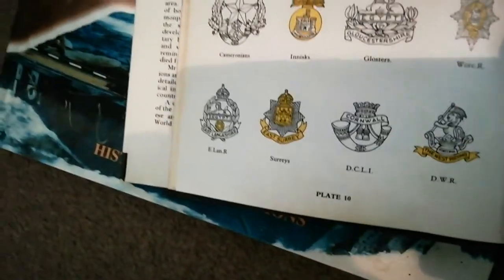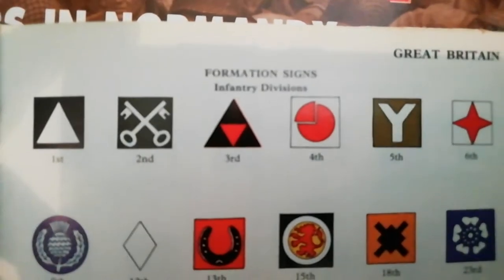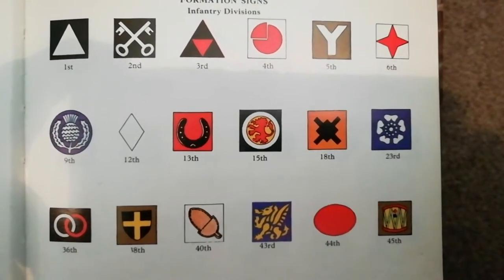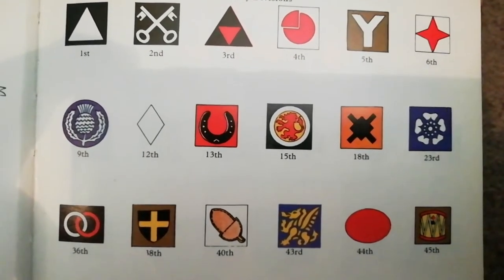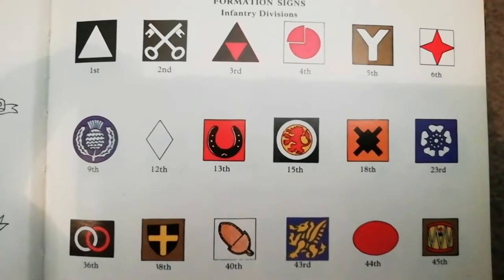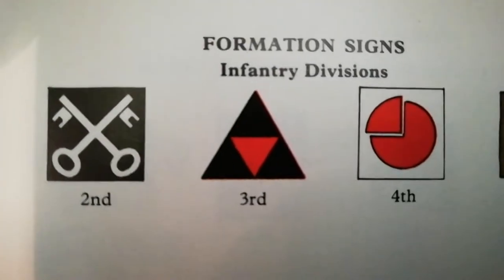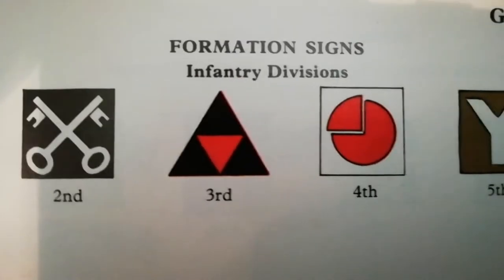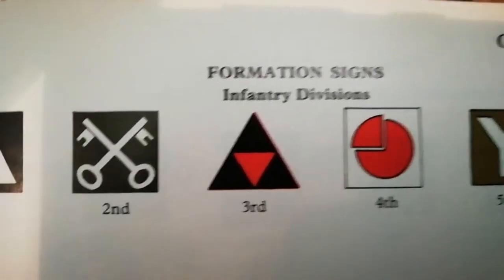From your corps you go down into your infantry divisions. These have formation signs and house all your units inside them. For example, going from the 21st Army Group, 2nd Army, 30th Corps, down to say the 3rd Infantry Division — which housed the 1st Battalion Suffolk Regiment that landed on Sword Beach on the 6th of June 1944.